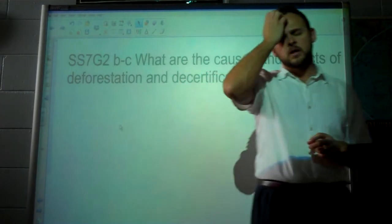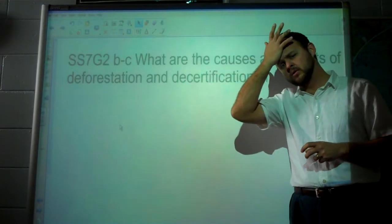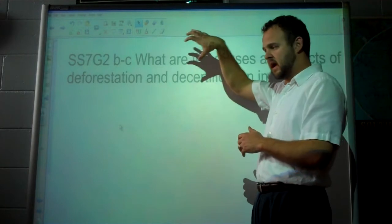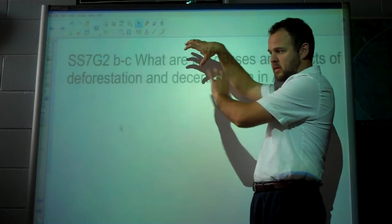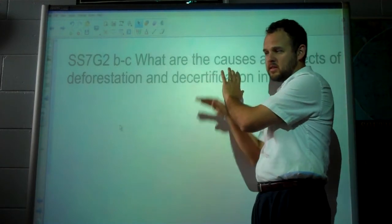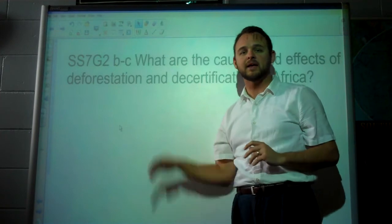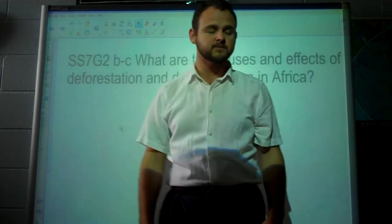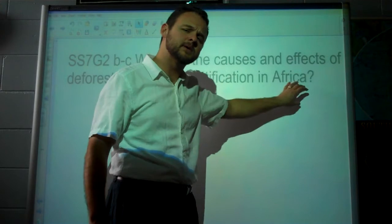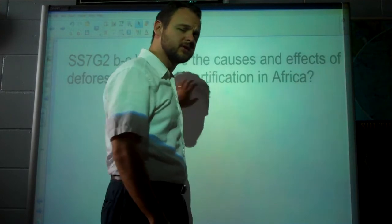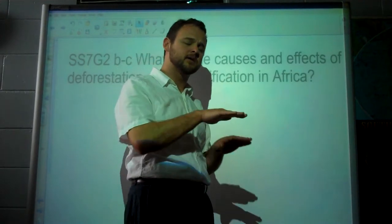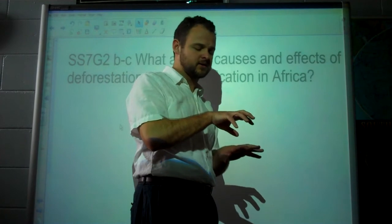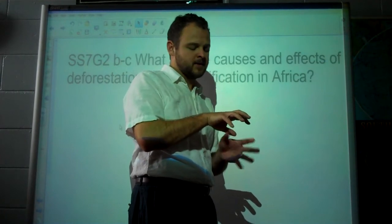Desertification happens along the Sahel region in Africa. That's the region between the Sahara Desert up here, then there's a strip of Sahel, and below that is savanna — grassland — and over here is rainforest. That little strip in between is called the Sahel; it's a transition area between the Sahara Desert and what's below it.